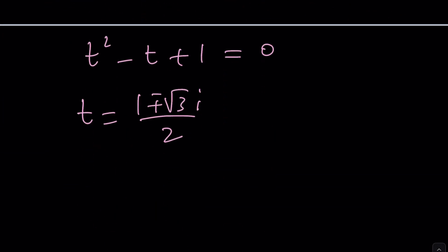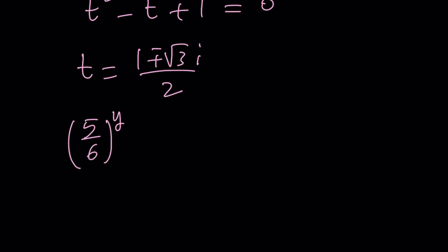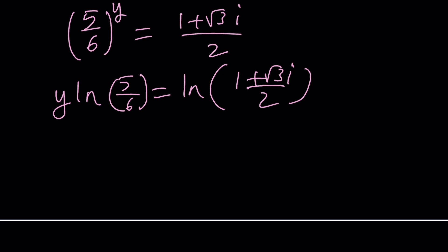What is t? t is 5 over 6 to the power of y. If you set, let's just do one of them because the other one is very similar. You can go ahead and natural log both sides. This should give you y ln 5 over 6 equals ln 1 plus root 3i over 2. This will actually give you something interesting. Let me simplify the natural log part. What is the ln of a complex number? First, you have to ln the modulus. The modulus of this complex number is 1.